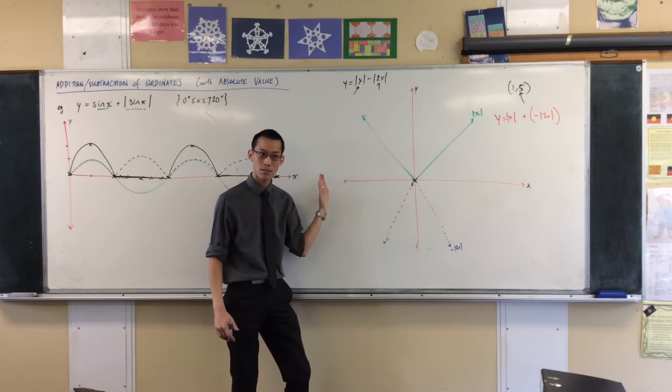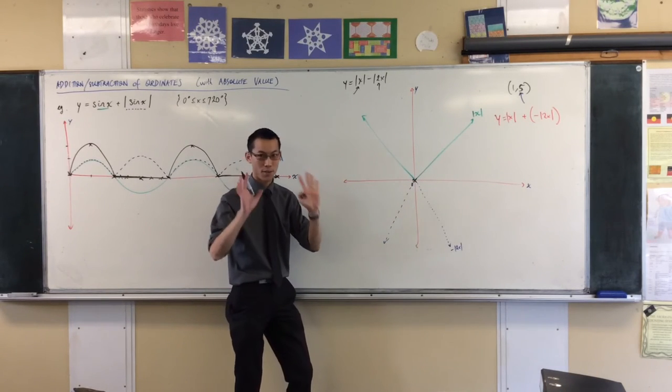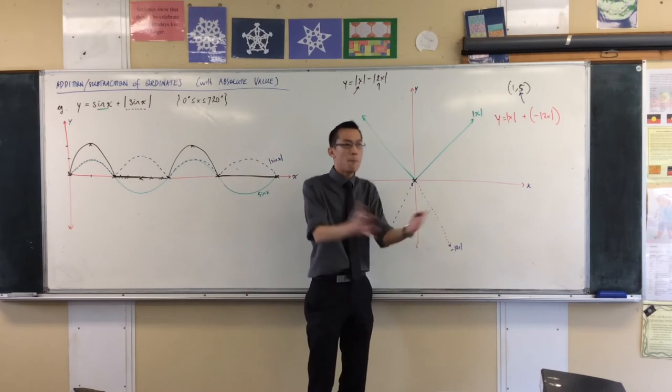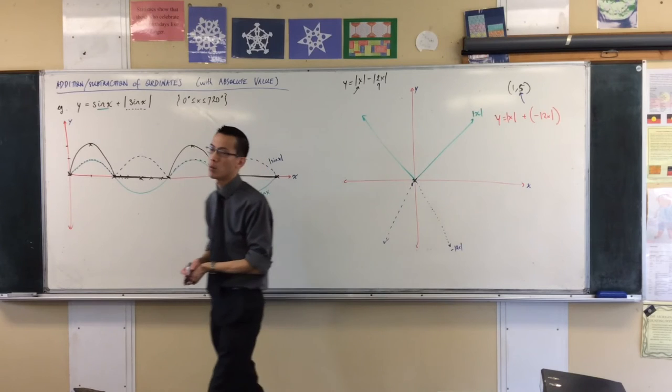I only need to do one side. Once I've got that side, I just reflect it across. Mathematicians, famously lazy. Take advantage of it. Now, I've got this side, I'm going to get to the right. Pick an ordinate, again, pick an easy one. What would you like? X equals?